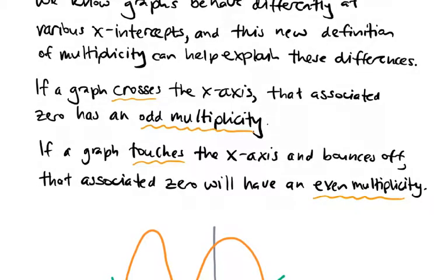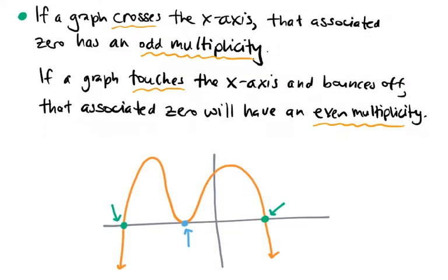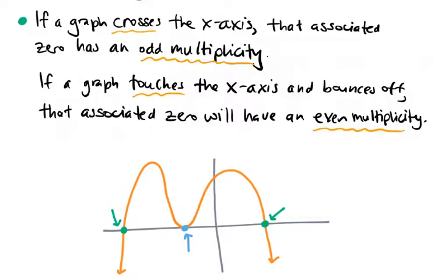First of all, if a graph crosses the x-axis, that associated zero has an odd multiplicity. That corresponds precisely with the green zeros highlighted on the graph. So if it strictly cuts through the x-axis, the multiplicity has to be odd — it could be a multiplicity of 1, 3, 5, etc. If a graph touches the x-axis and bounces off — I'll frequently just call it bouncing — then that zero has to have an even multiplicity.